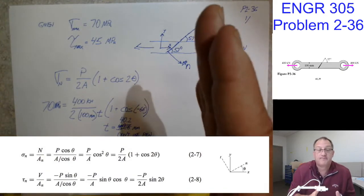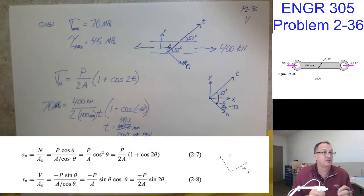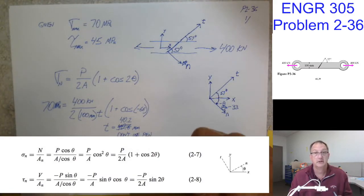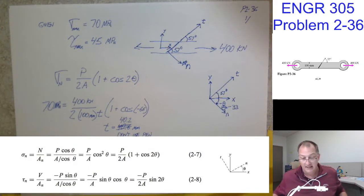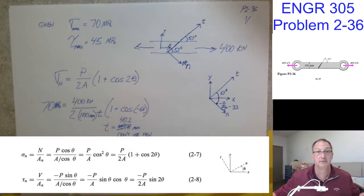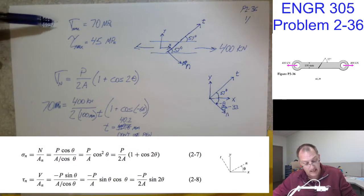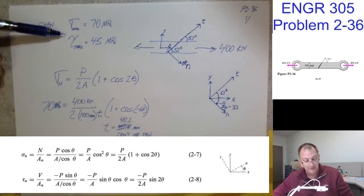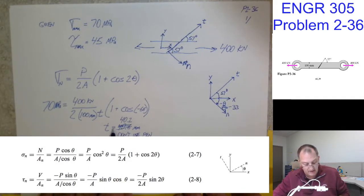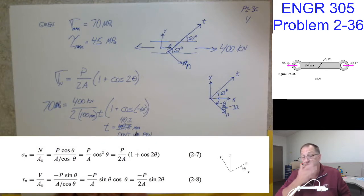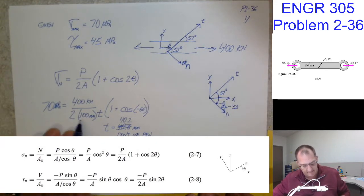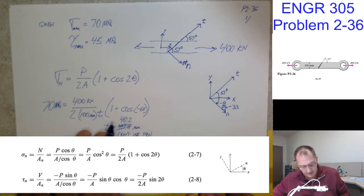What I like about this problem is we really have a situation where there are two different failure criteria here. There are two different ways that this situation can go bad. It's like a lot of real problems, it's not just a textbook problem. It's a real problem that we need to take into account. This could happen or that could happen. And that's what is going on. We could either fail in normal stress or we could fail in our shear stress.